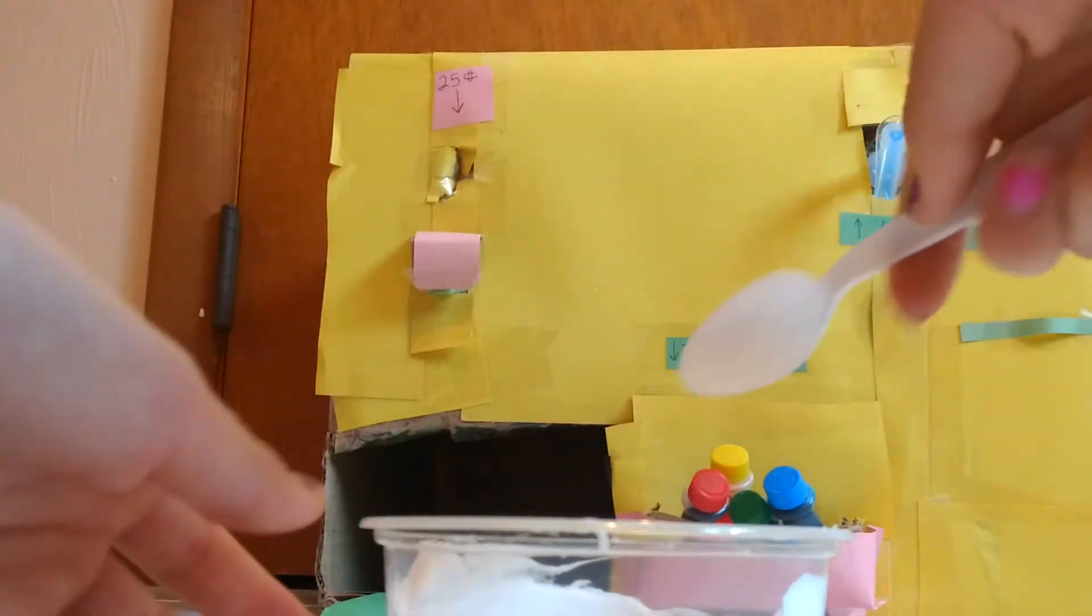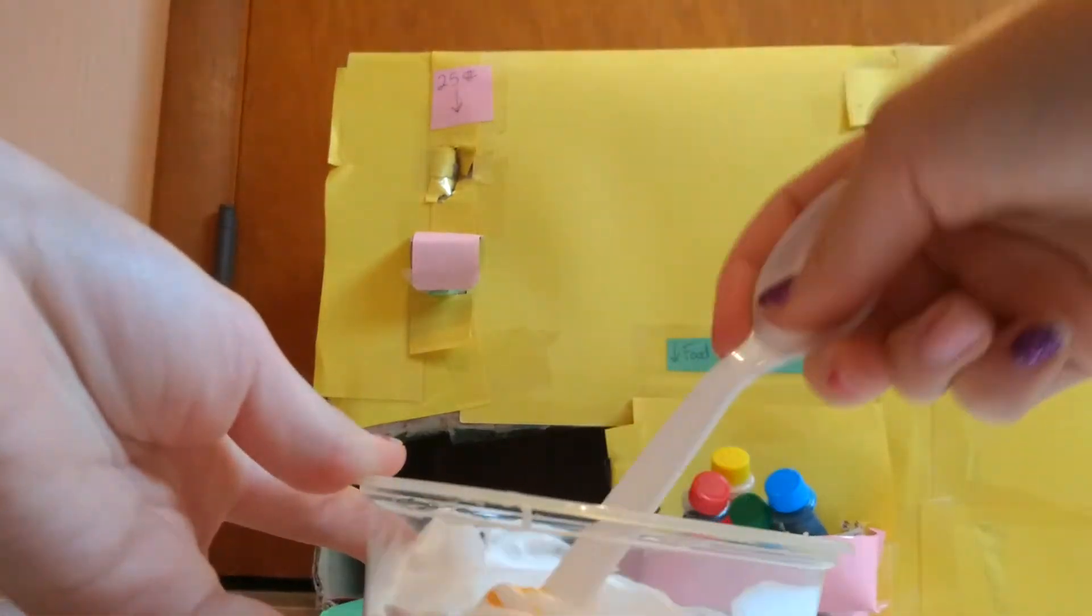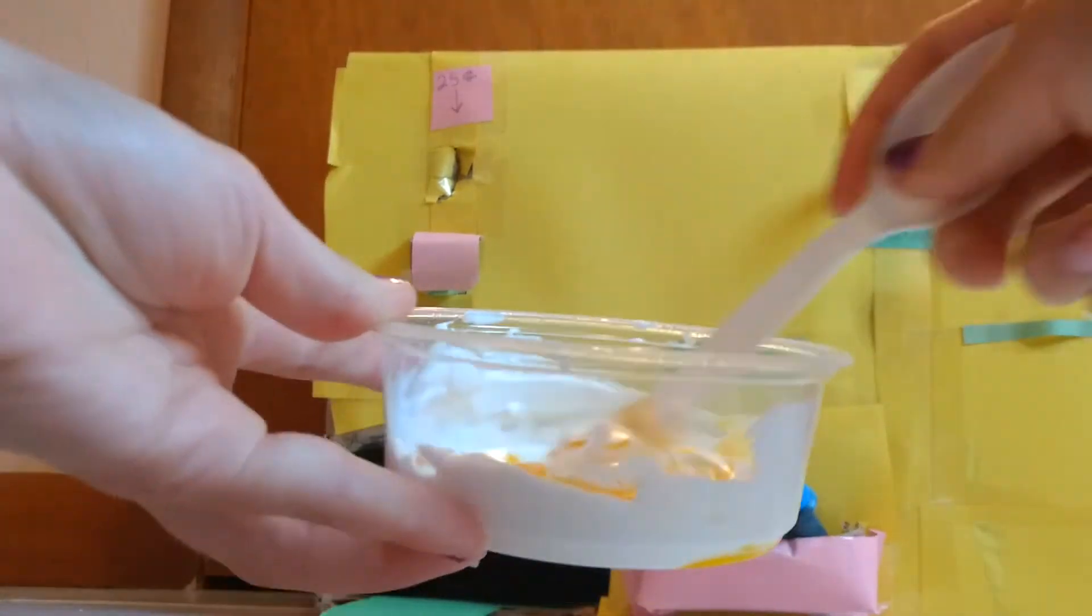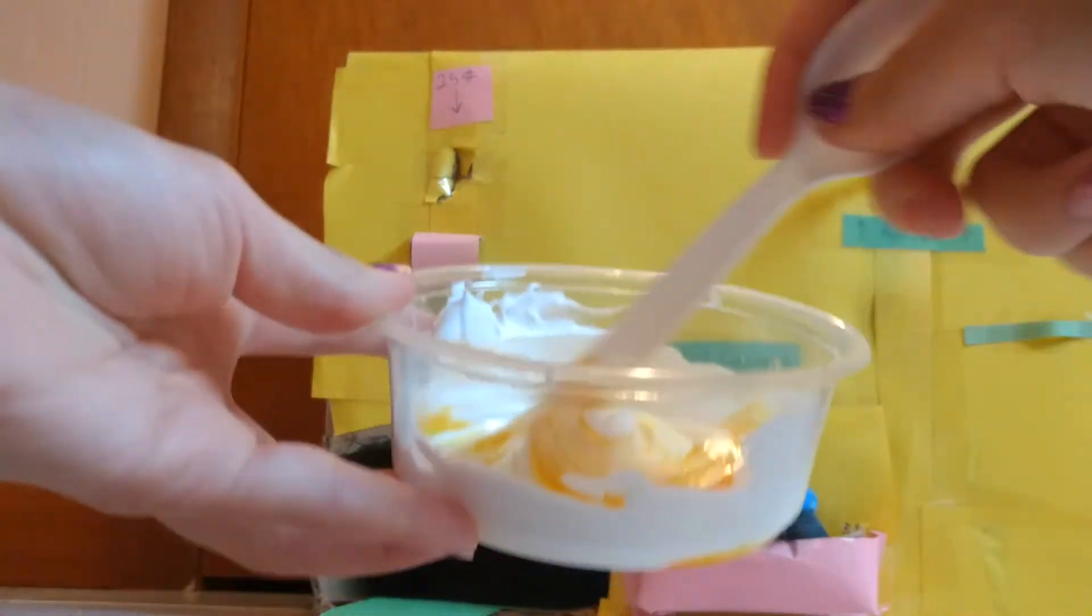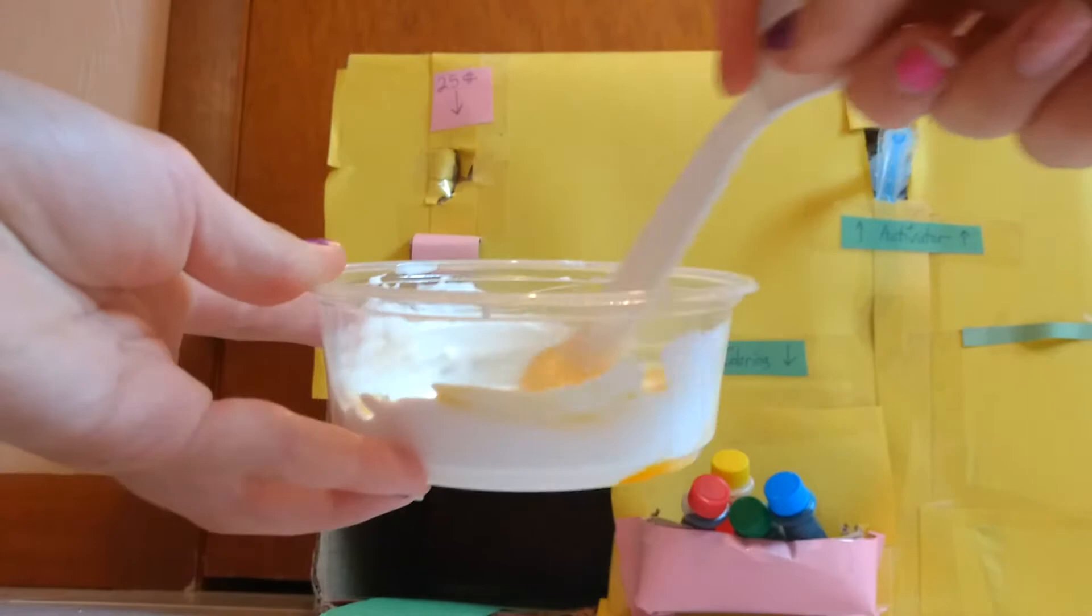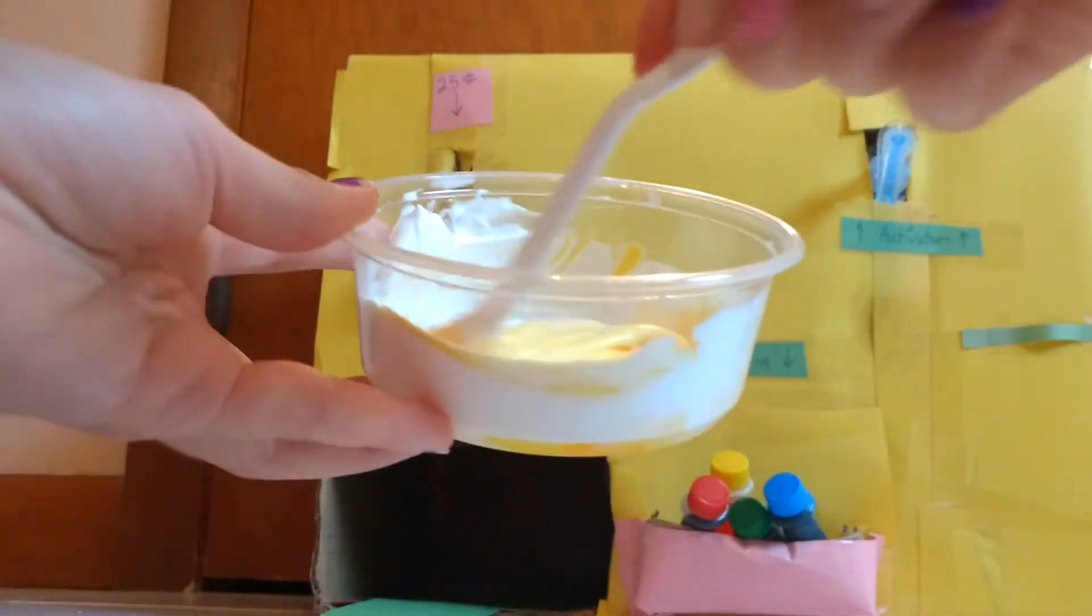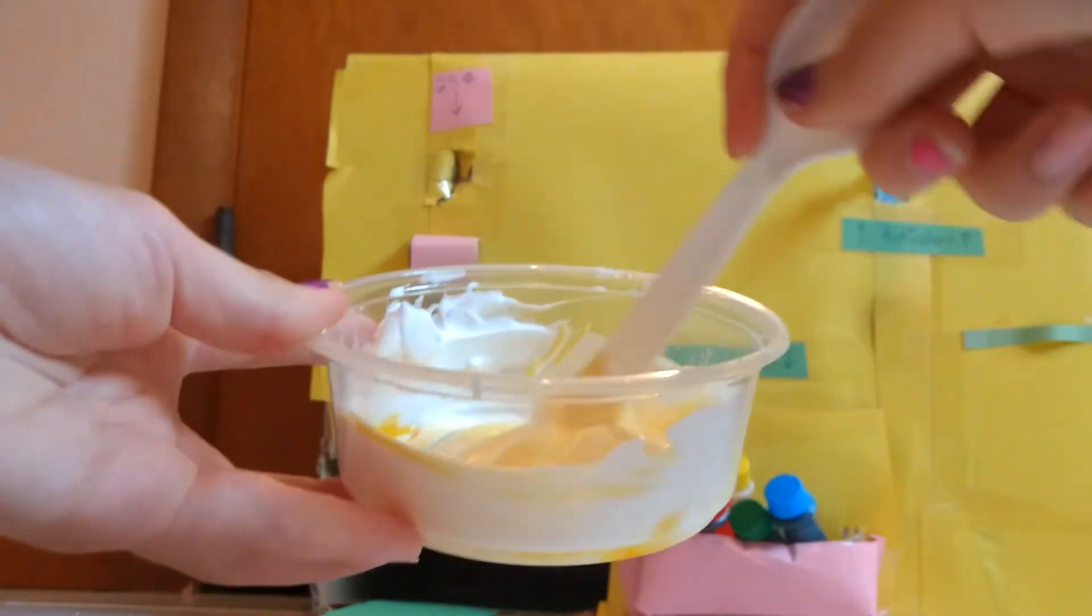Take the spoon, I'm going to take the back of it and stir it with the back. And then just go ahead and stir up this slime. It looks a little bit darker than butter, but that's okay.